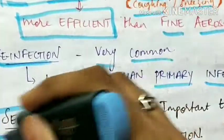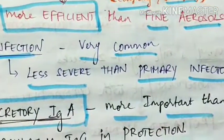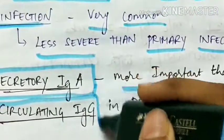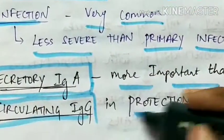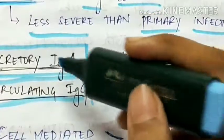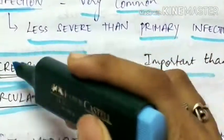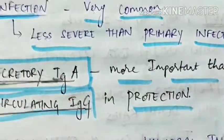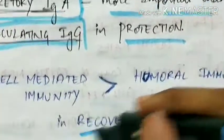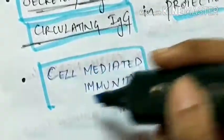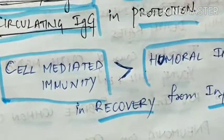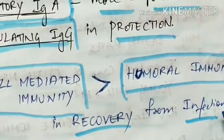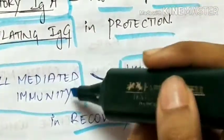Secretory immunoglobulin A is more important than circulating IgG in protection from RSV. In recovery from the infection, cell-mediated immunity plays a major role compared to humoral immunity.